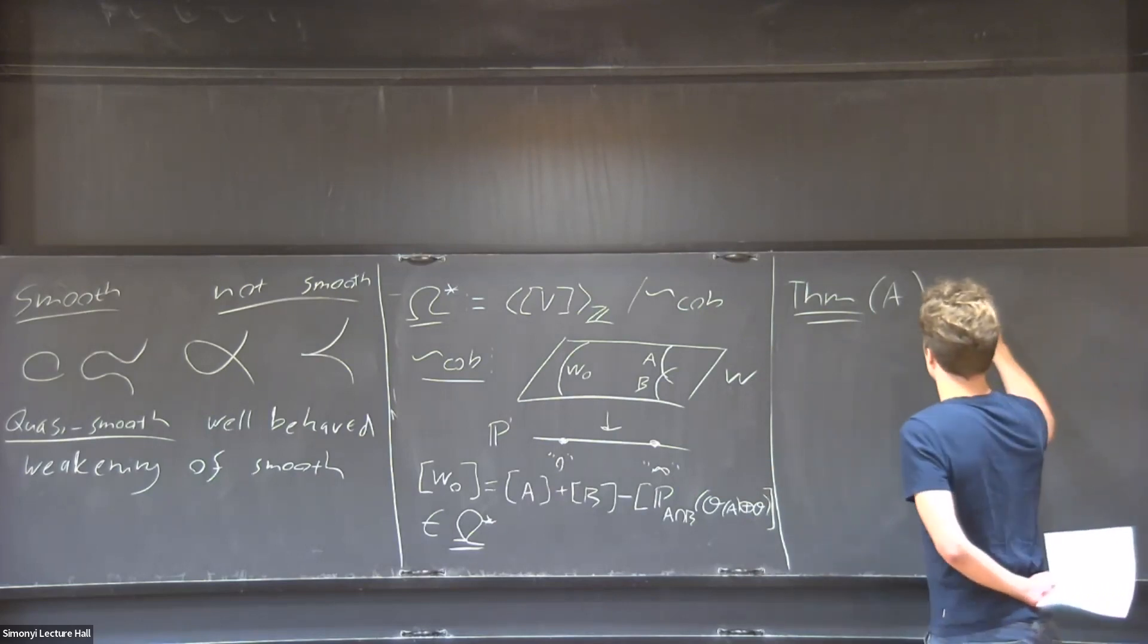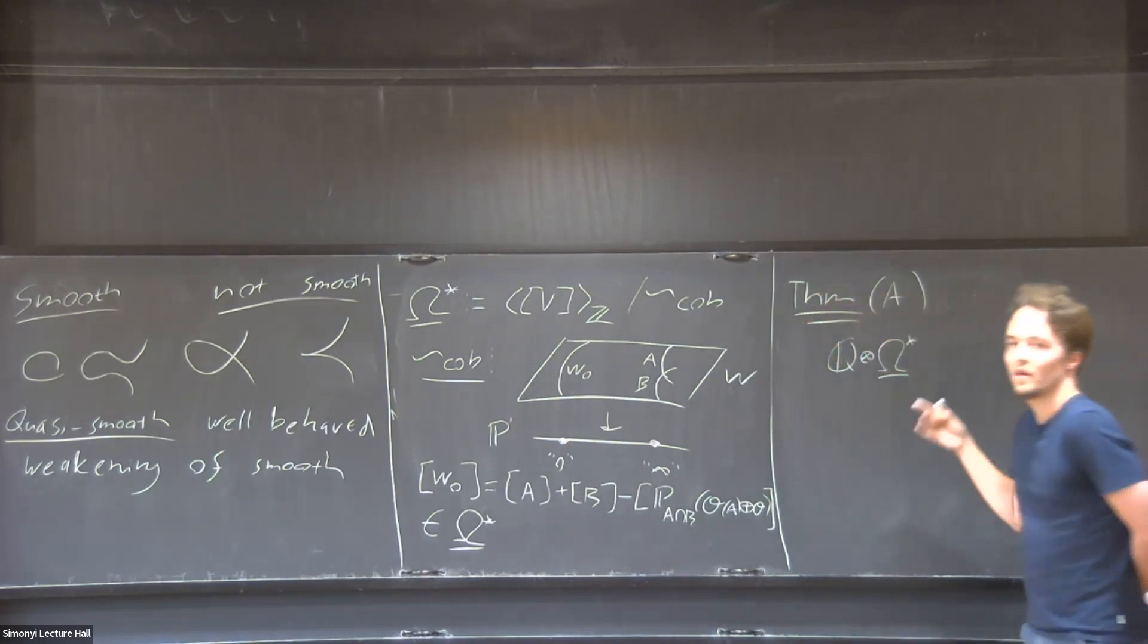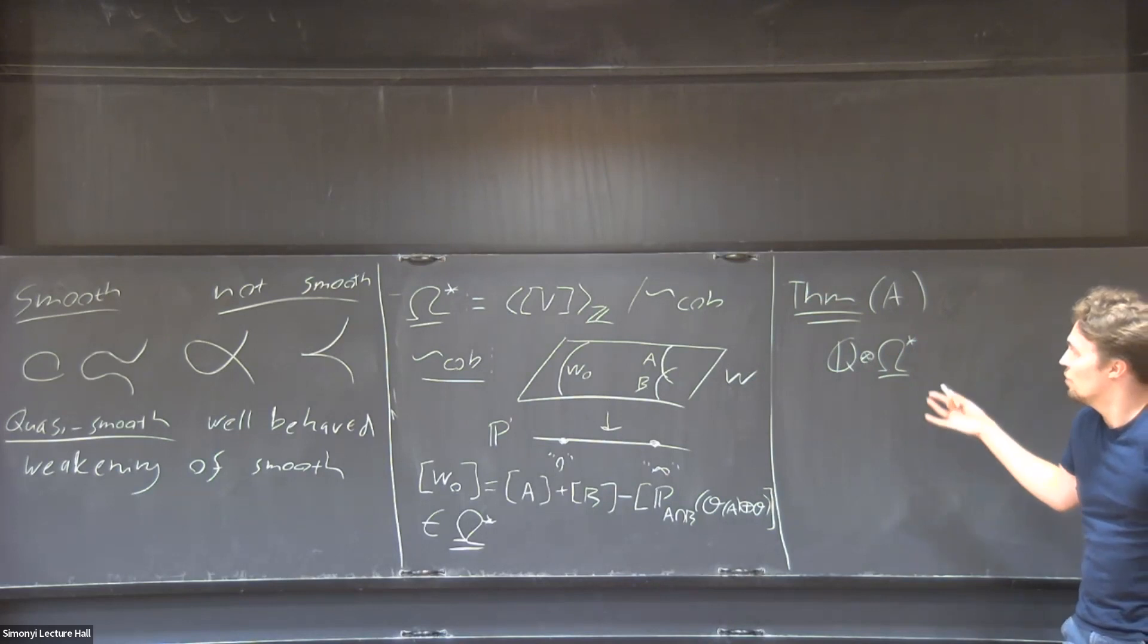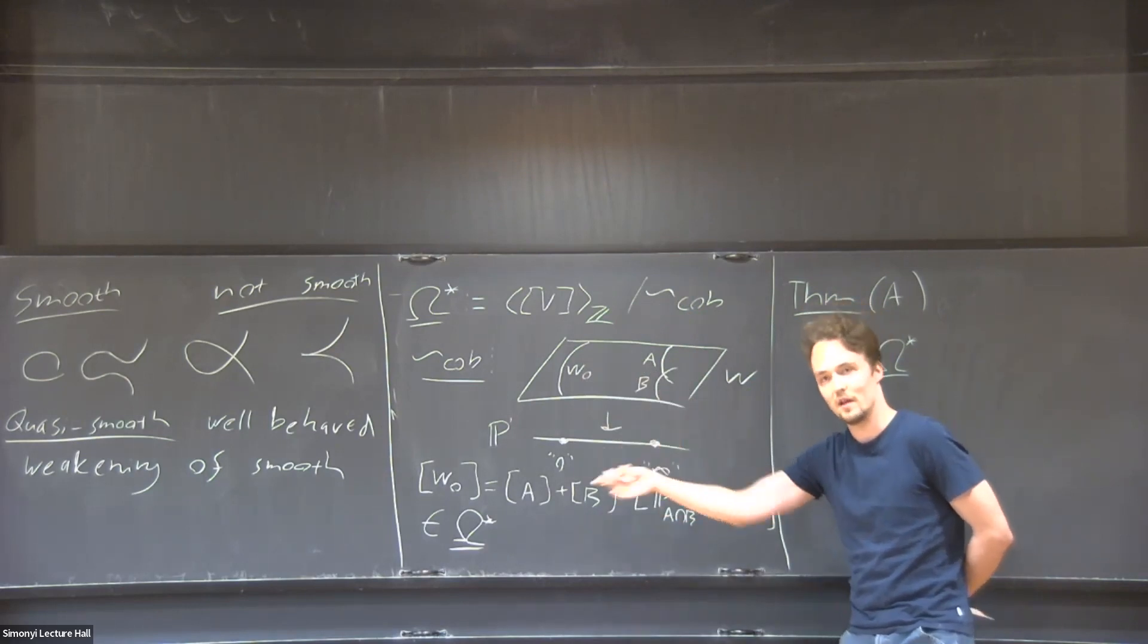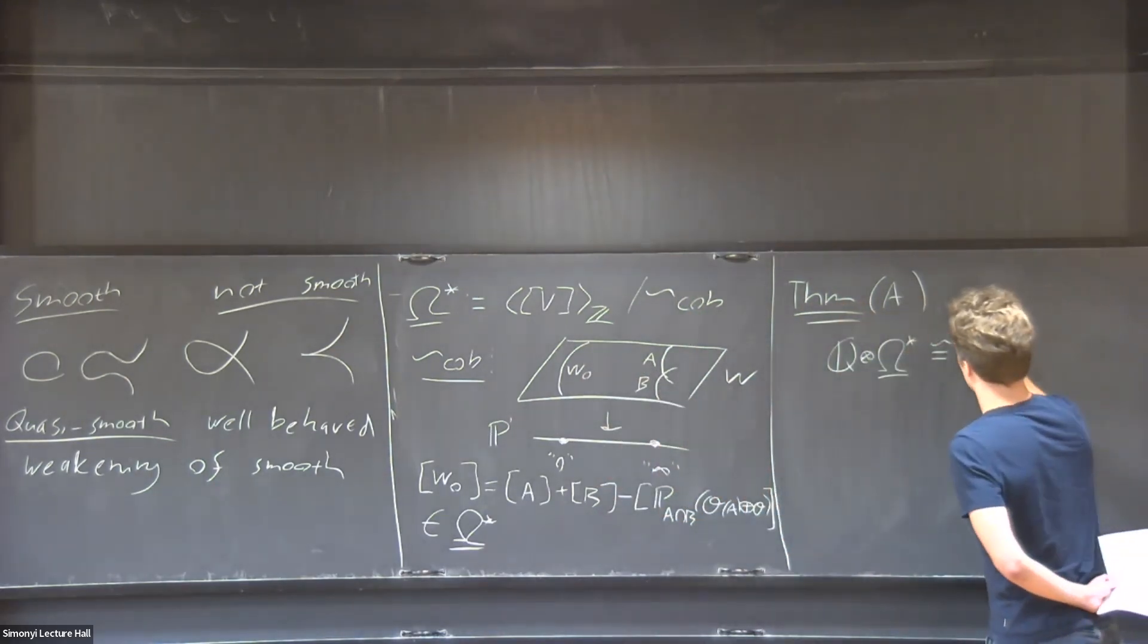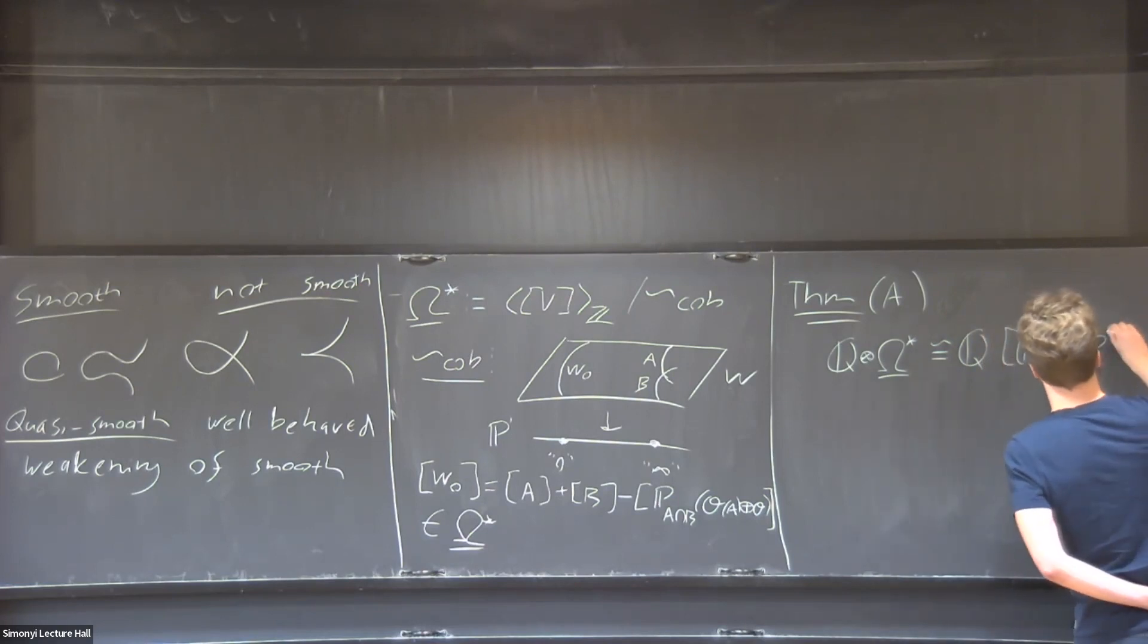There exists an isomorphism of rings. What this means is you start with the free Q vector space generated by this and mod out by the Q vector space of relations. Then this is isomorphic to an infinite polynomial algebra generated where the variables that generate it correspond to projective spaces.